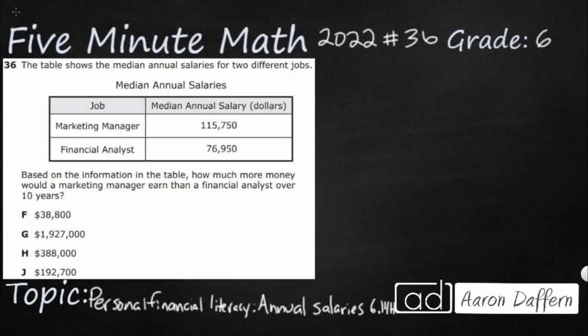Hello, and welcome to 5-Minute Math. Today we are looking at the 6th grade concept of personal financial literacy — annual salaries. This is standard 6.14H in the great state of Texas, and we are using item number 36 off the 2022 released STAAR test.